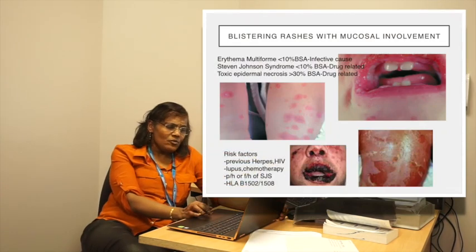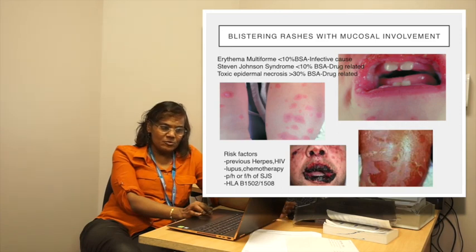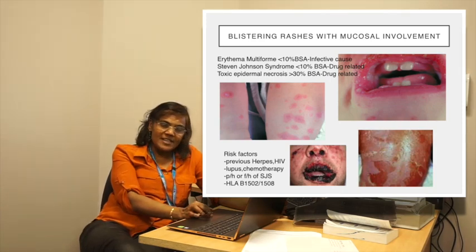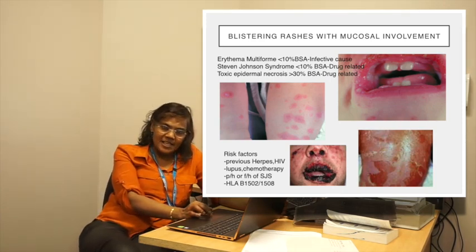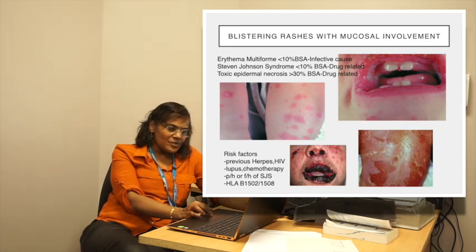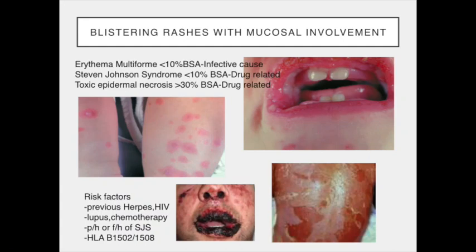There could be some risk factors in these patients which predispose some more than others, especially a past herpes infection, HIV infection, a weakened immune system with lupus, recent chemotherapy, and also belonging to specific HLA types B1502 or B1508, which are associated with carbamazepine or allopurinol respectively. Also a family history of Stevens-Johnson syndrome predisposes other family members to a similar situation. Stevens-Johnson syndrome has blistering lesions commonly seen on the skin, mouth, and eyes — mucosal areas.